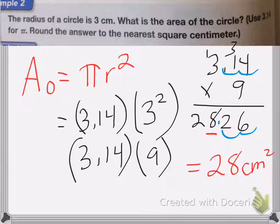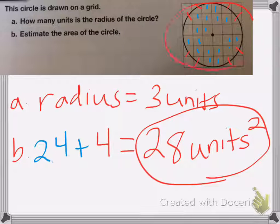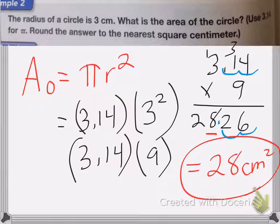Now if you notice, this answer is the same as this answer. So the circle we just did was the same circle we did in this previous problem. The only difference is that we multiplied it by pi, because pi is about 3. So that's how we find the area of the circle.